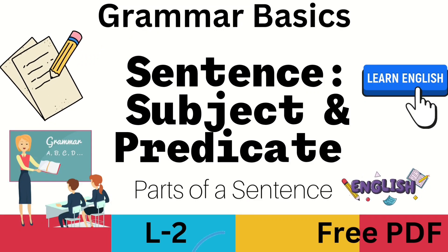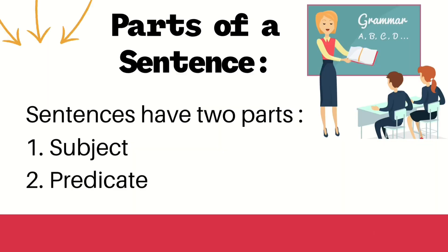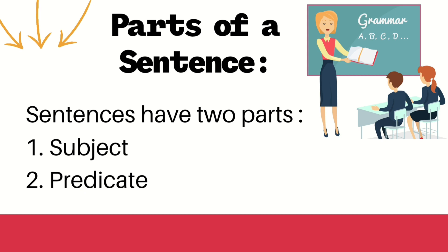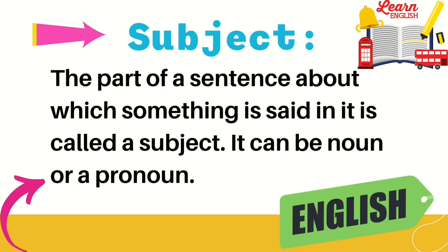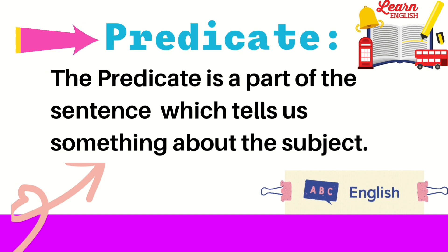In this video you will get to know about subject and predicate — parts of a sentence. Sentences have two parts: subject and predicate. The subject is the part of a sentence about which something is said; it can be a noun or a pronoun. The predicate is the part of the sentence that tells us something about the subject.